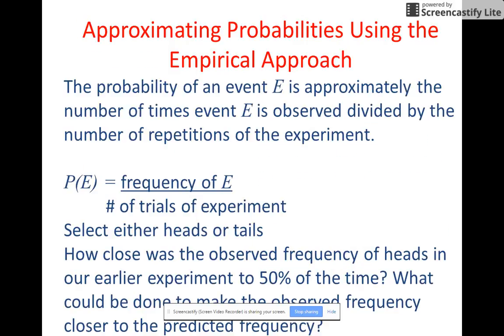Now, you can approximate probabilities using the empirical approach. What this means is running a trial and just seeing how many times the event E is satisfied. And then assume that if you continue the experiment that you're going to get the same results. So the frequency of E being satisfied divided by the number of trials in the experiment would give you the approximate probability. So how close was the observed frequency of heads in our earlier experiment to 50% of the time? What could be done to make the observed frequency closer to the predicted frequency? Well, we mentioned before is just doing more of the same.